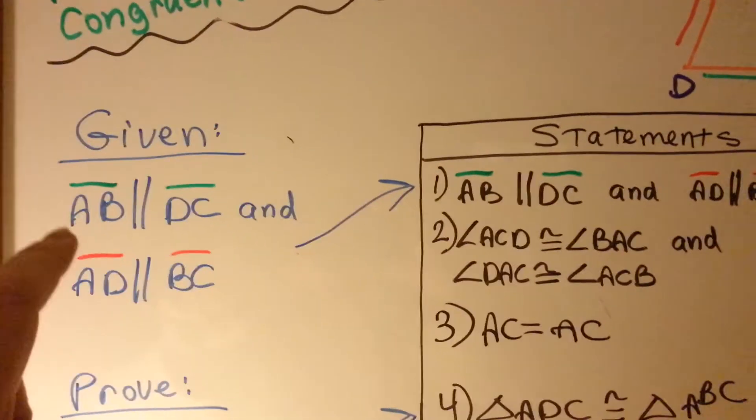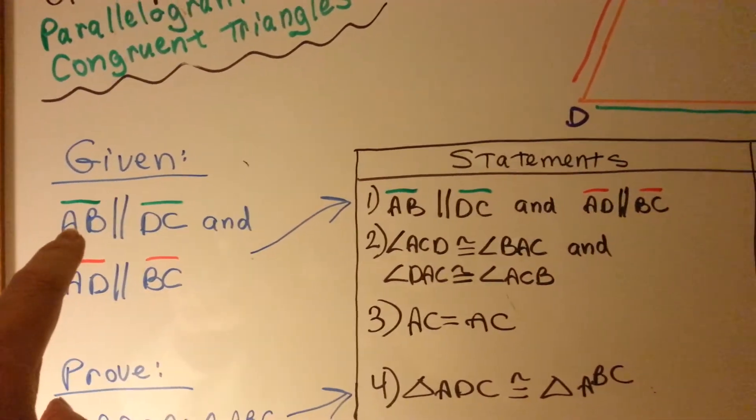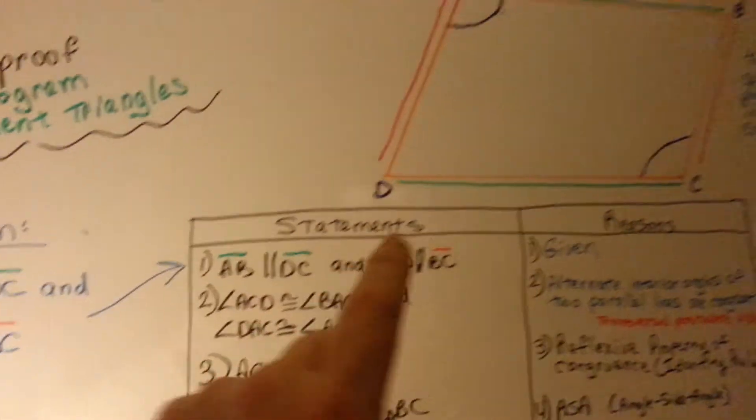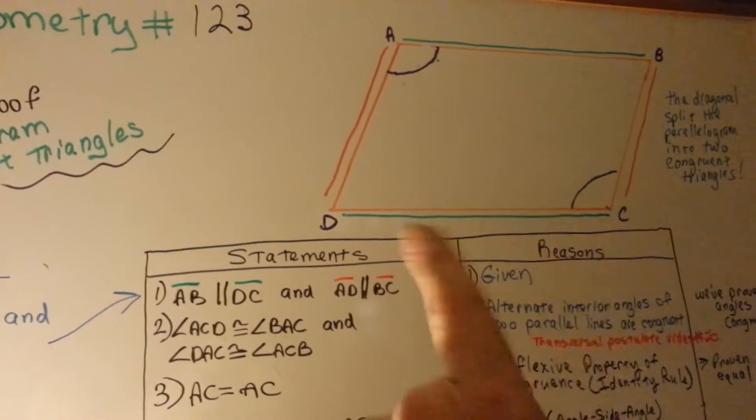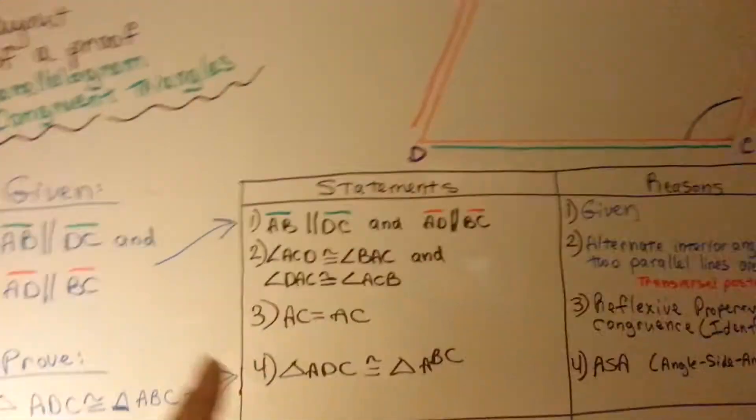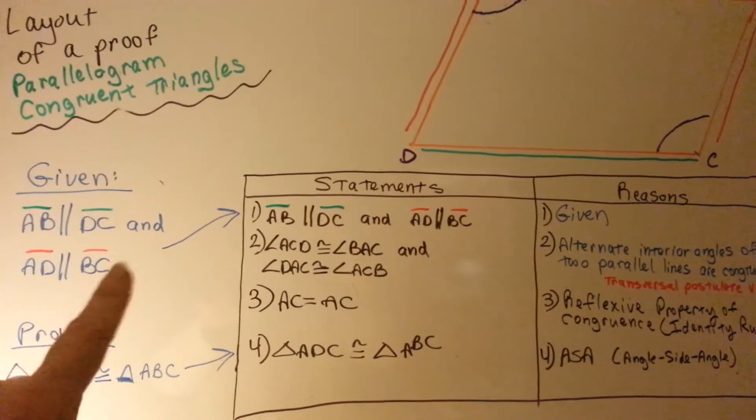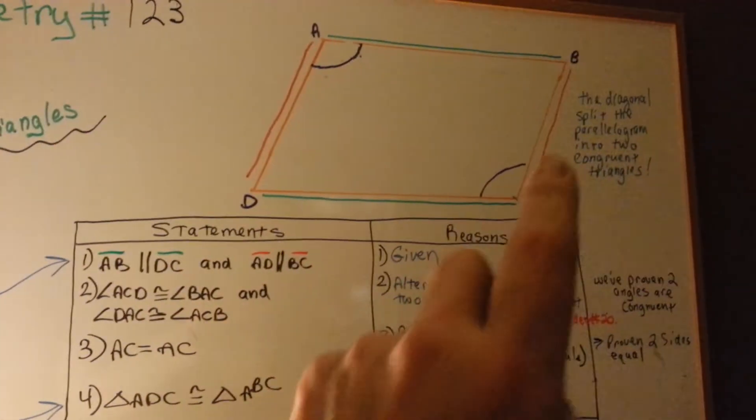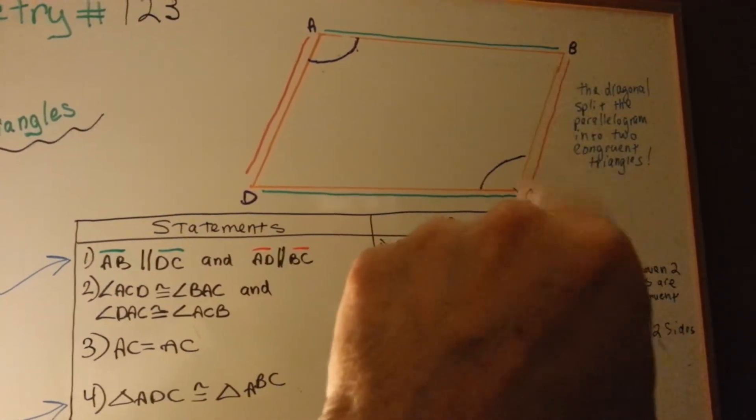So, our given is that line AB is parallel to DC. The green one is parallel to the green one. And that the two reds are parallel. AD is parallel to BC. AD is parallel to BC.